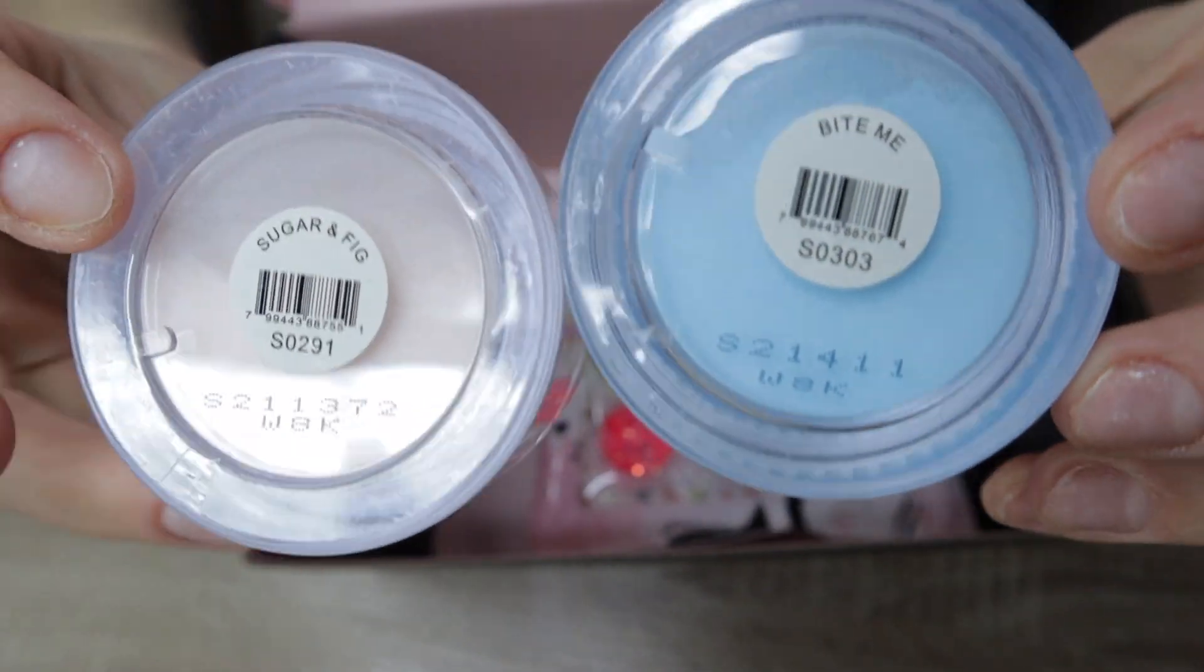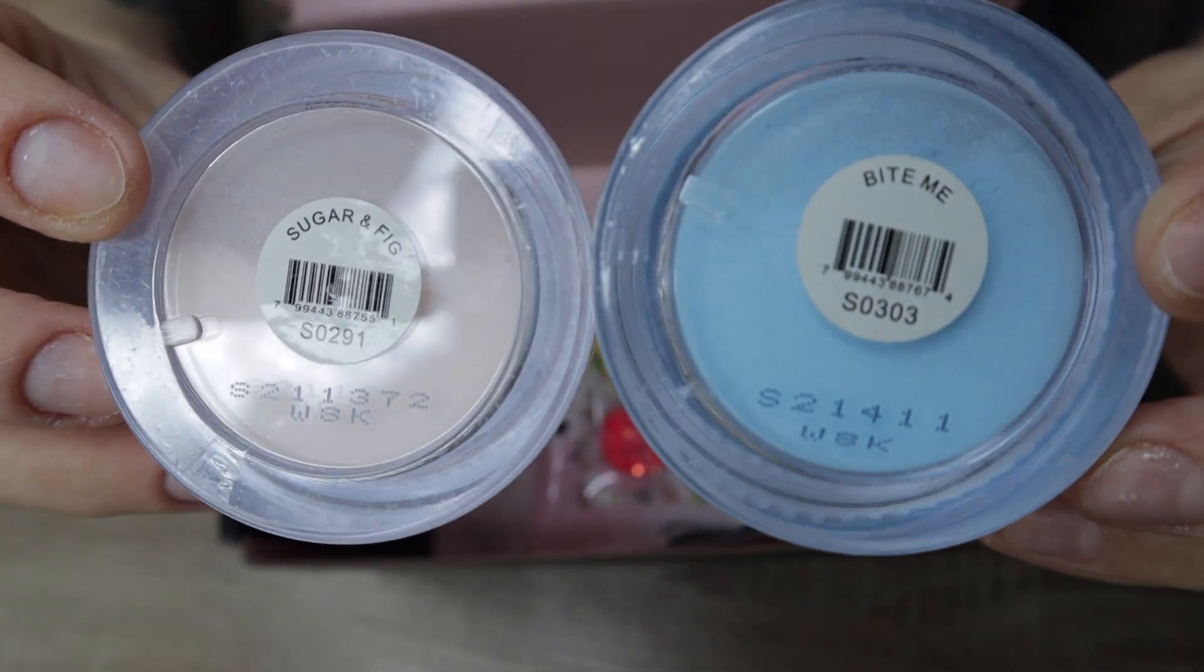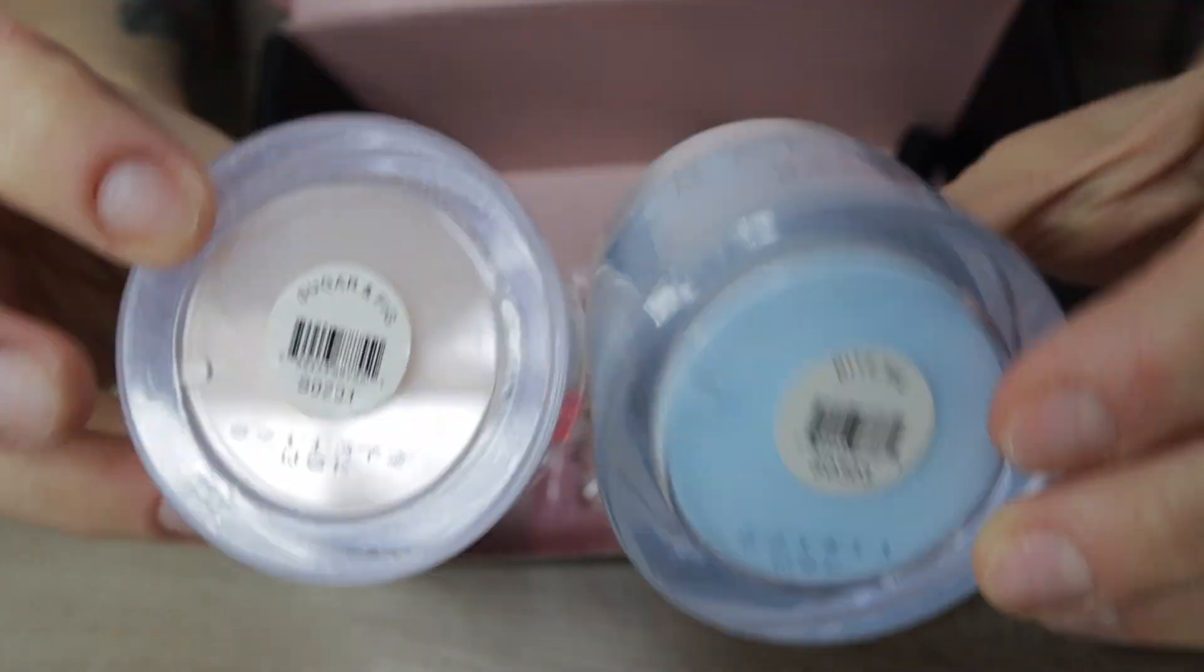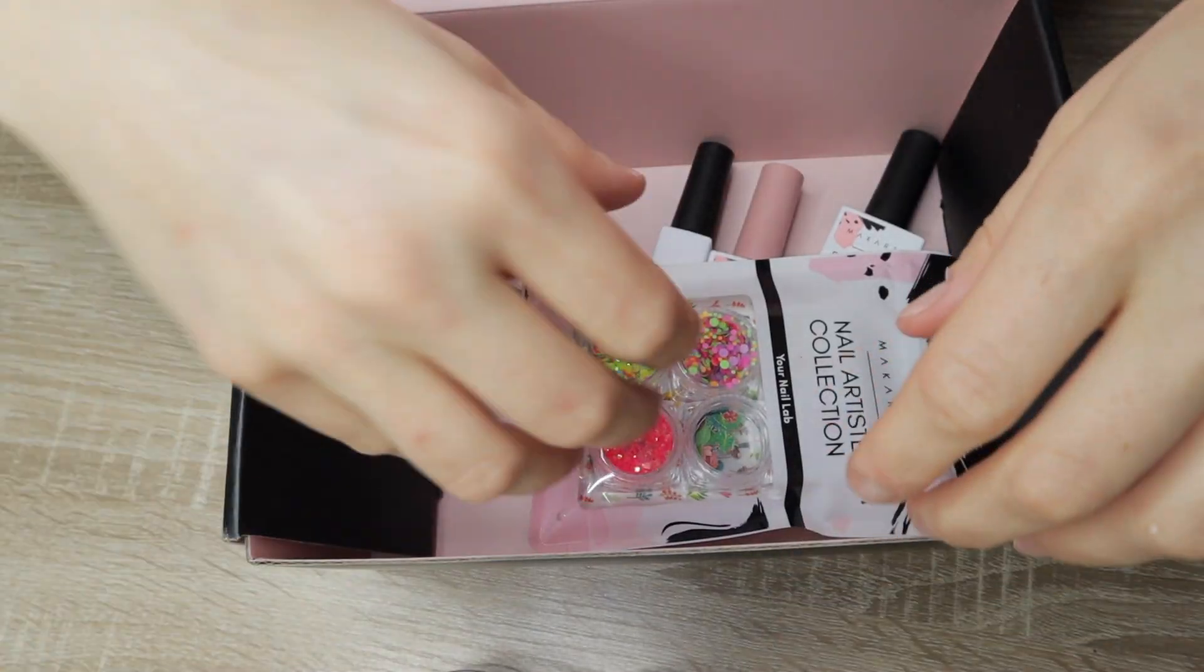First thing that I have in here are the all-in-one acrylic and dip powders. I think these are new to their company, a two-in-one. There's Sugar and Fig and Bite Me. I am going to be using these today in the manicure.